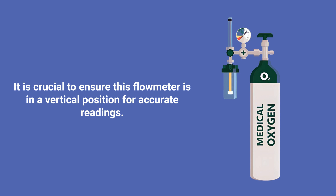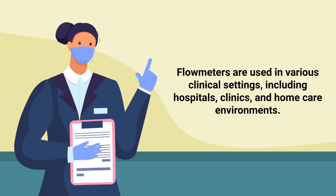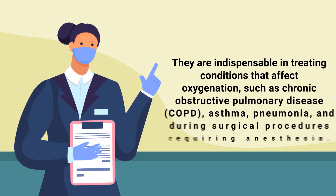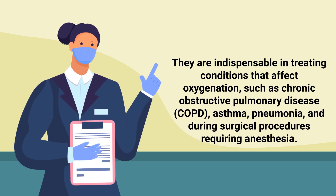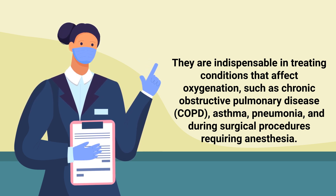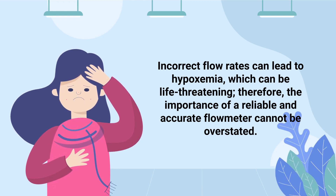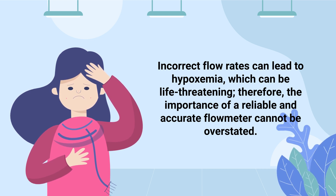It is crucial to ensure this flow meter is in the vertical position for accurate readings. Flow meters are used in various clinical settings including hospitals, clinics, and home care environments. They are indispensable in treating conditions that affect oxygenation, such as COPD, asthma, pneumonia, and during surgical procedures requiring anesthesia. Incorrect flow rates can lead to hypoxemia, which can be life-threatening — therefore, the importance of a reliable and accurate flow meter cannot be overstated.